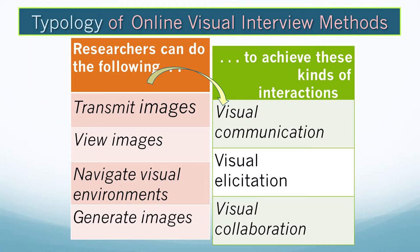In Qualitative Online Interviews, I've introduced a typology of online visual methods. In the first column, I'm describing the kinds of activities we can do online: we can transmit images, we can view images, we can navigate within visually rich environments, and we can generate images. On the other side, it describes the kinds of interactions we might apply in a research context. Sometimes we may find that we are dealing with a very complex phenomenon, one with many parts and relationships, different concepts that can be communicated more simply with a diagram or a mind map. That's what we mean by visual communication.